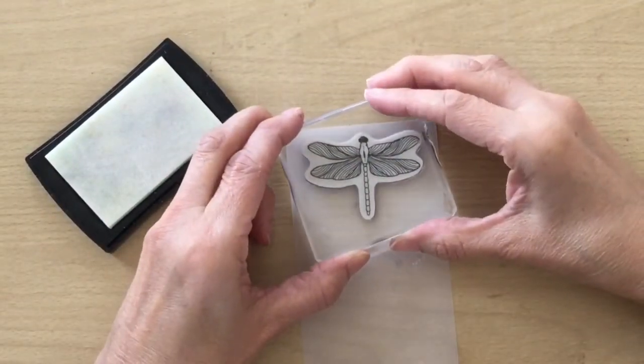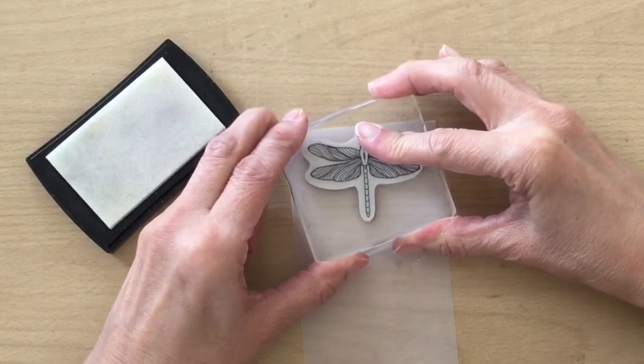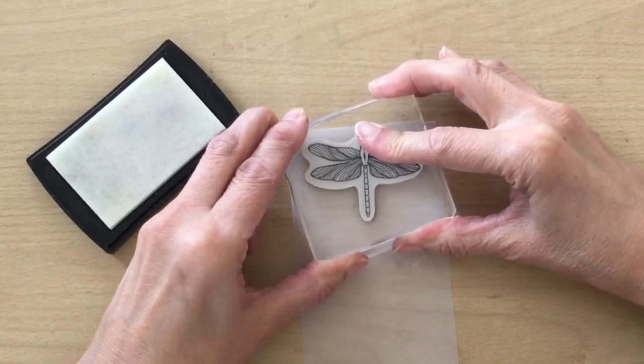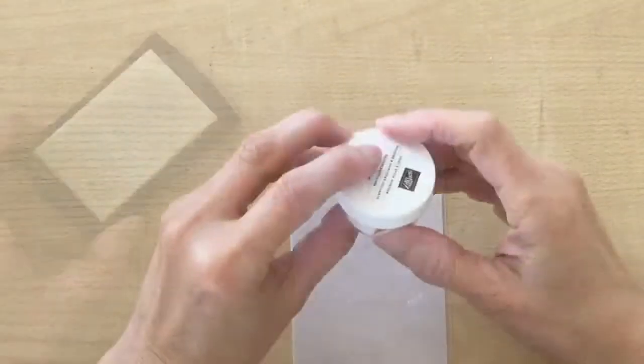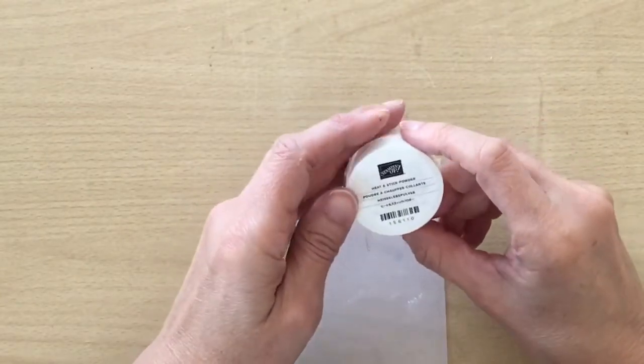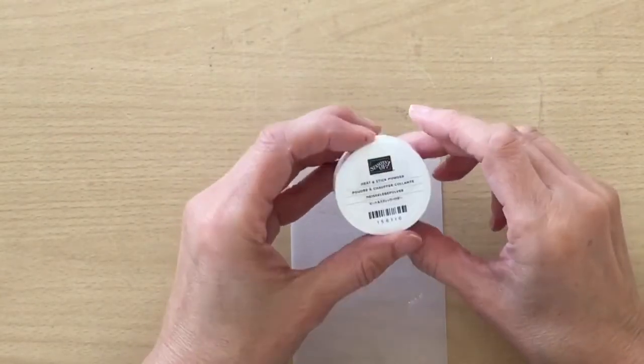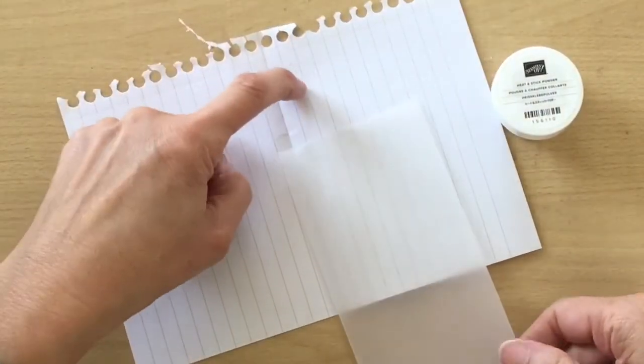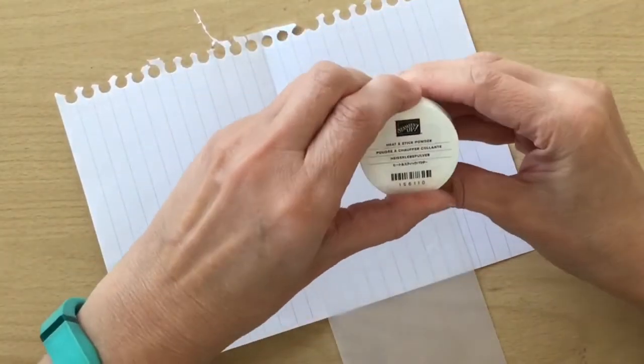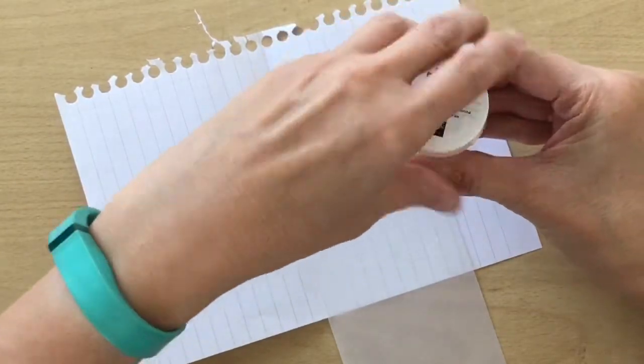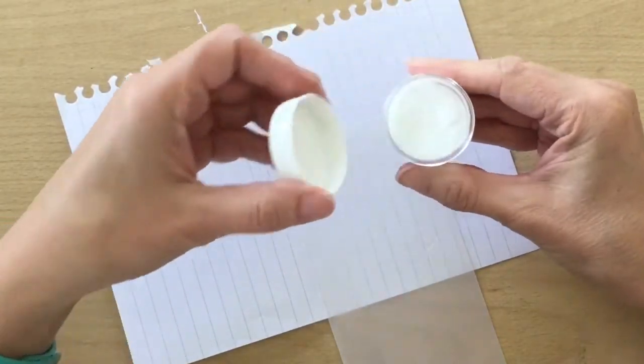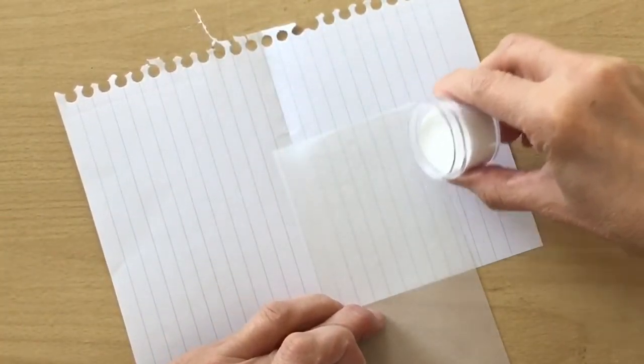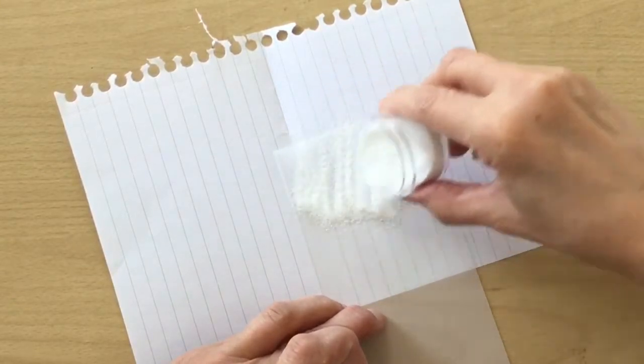And stamp that down. So I'm actually going to be using the Heat & Stick powder from Stampin' Up. I'm putting this on a piece of scrap paper and I'm going to tip my powder over my stamped image. Now you could just use gold embossing powder.